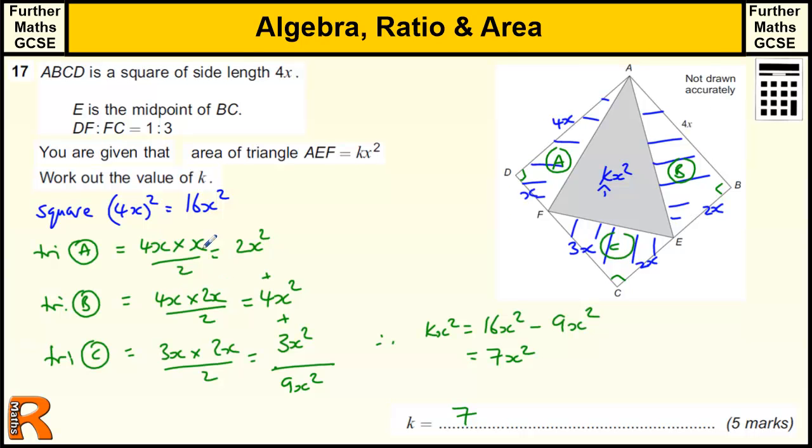Then if you do any two of these three calculations, I think actually you get one method mark for doing one of these areas. If you do all three, you get two method marks. And then showing that you've got to do the subtraction gives you another method mark, and then the answer mark is 7.